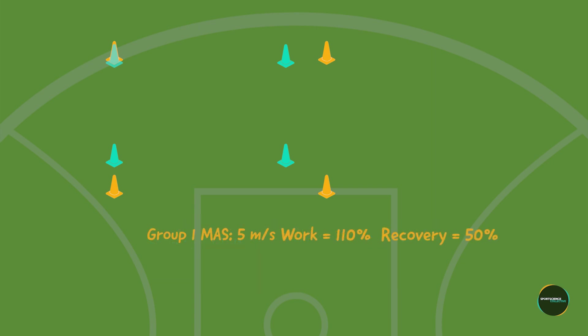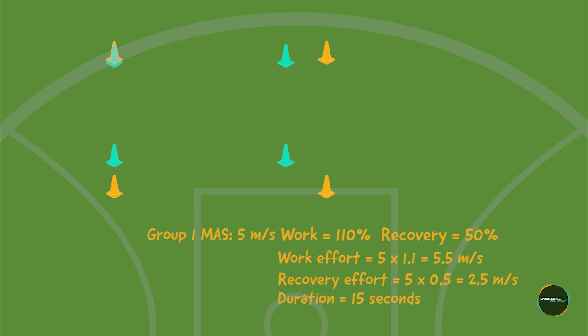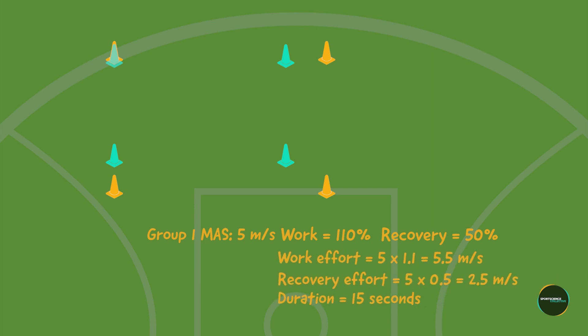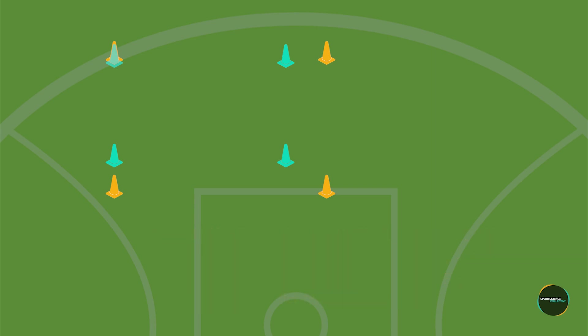Using group one as an example — with an MAS of 5 meters per second — 110% of MAS is found by multiplying 5 by 1.1, giving a speed of 5.5 meters per second. Using the same process, 50% MAS equals 2.5 meters per second. With work efforts set to a duration of 15 seconds, we multiply 5.5 and 2.5 by 15 seconds. During the work effort, athletes would need to cover 82.5 meters, while the recovery effort requires covering 37.5 meters.